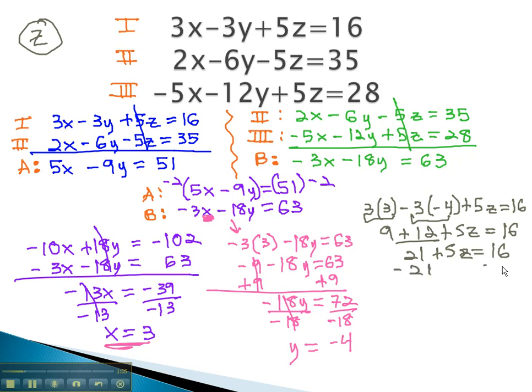Subtracting 21 from both sides, we get 5z is equal to negative 5, and dividing both sides by 5 gives us z equals negative 1.